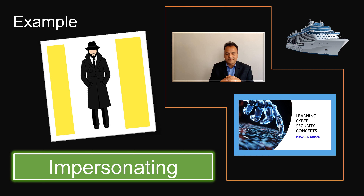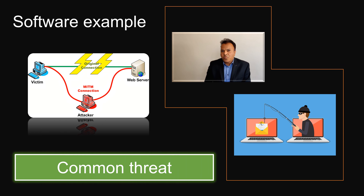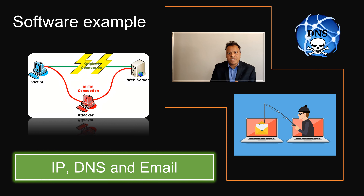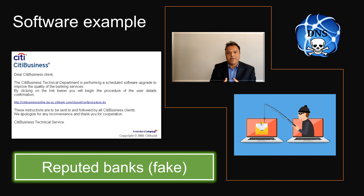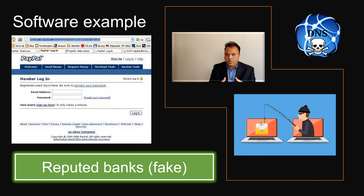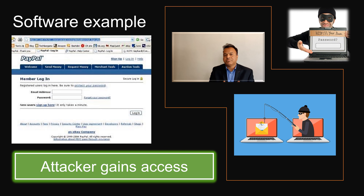Spoofing is a very common threat in software applications. There is IP spoofing, DNS spoofing, and email spoofing. For example, you might receive an email appearing to be from your bank — Citibank, RBC, or similar — asking you to log in and change your password. You click the link and a website opens that looks exactly like your bank's website, with the same logo, banner, and colors. You fill in your username and password, but if you check the URL carefully, it is a different IP address or domain. The attacker can then gain access to your banking credentials.